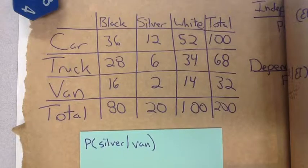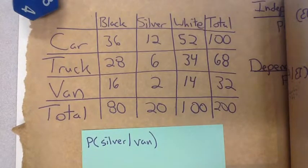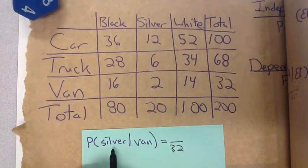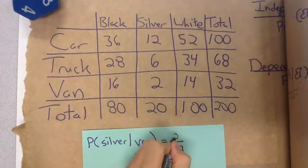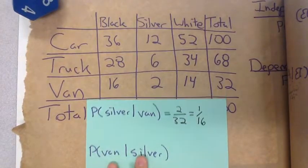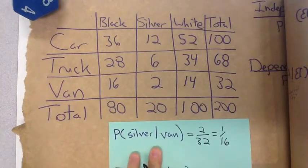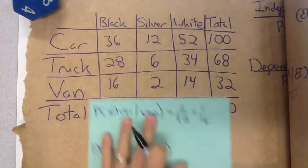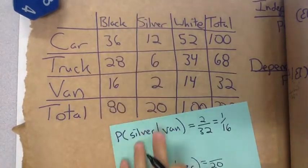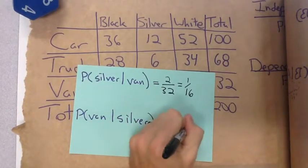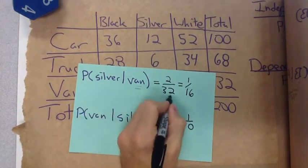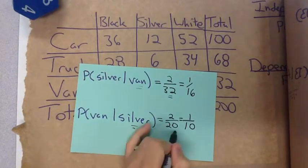Let's say silver given that it's a van. We look at our total number of vans, which is 32. Of those 32 vans, how many are silver? There are two of those 32, so we get 1 16th. But what if we switched it around? What if it's a van given that it's silver? Given that it's silver, it has to be in the 20. And how many of those silver vehicles are vans? It's going to be 2. That is 1 10th, which we can see is clearly different. It's paying attention to that order again. Van was our denominator, the total number. Silver, again, our denominator.